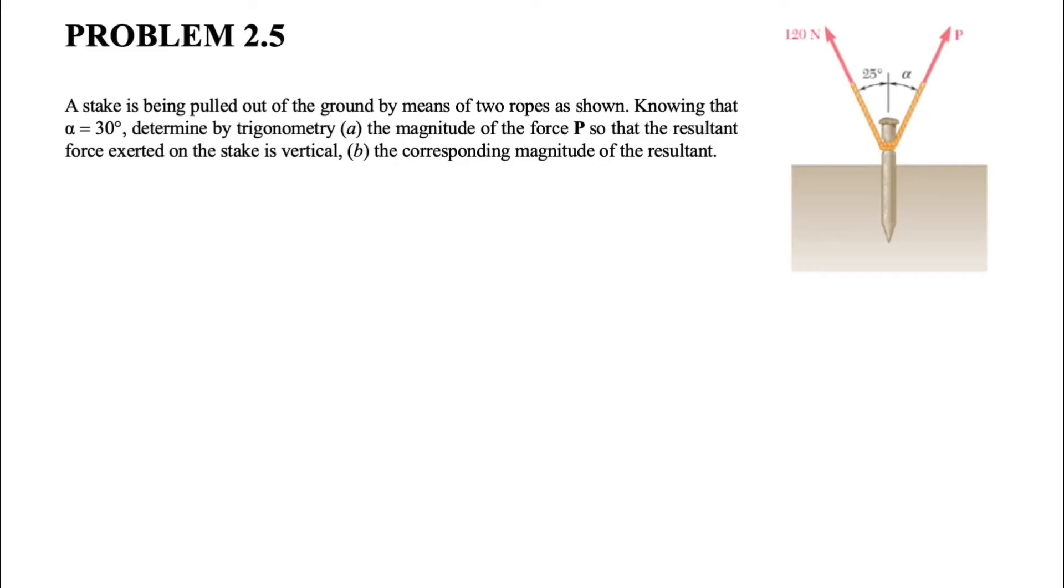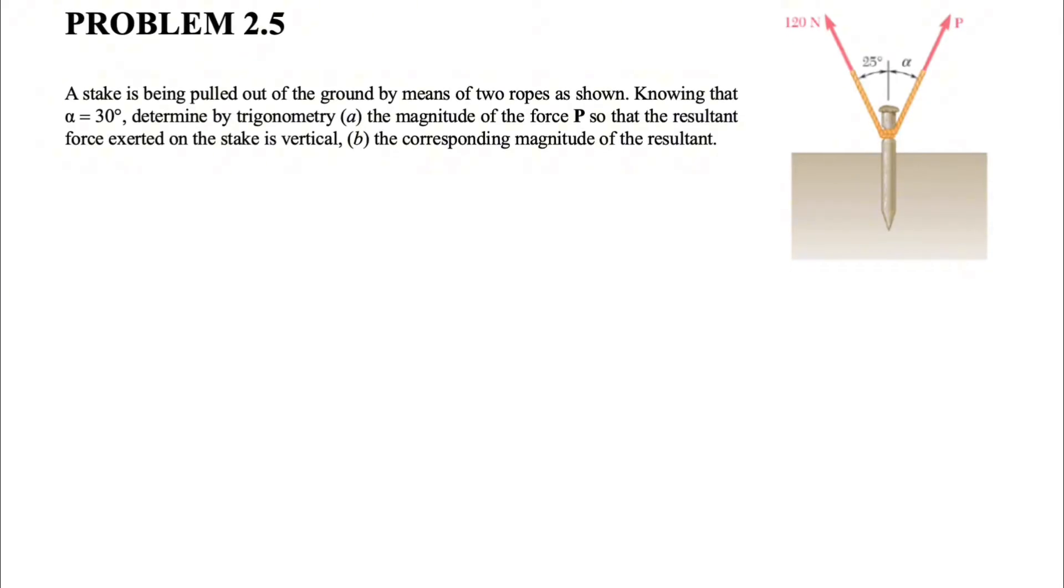All right guys, welcome back. We have another question from chapter two of Beren Johnson textbook and we have these two ropes that are pulling out the stake off the ground and we know that the angle alpha in here is 30 degrees.